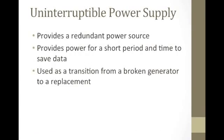The uninterruptible power supply provides a redundant power source. When a piece of technology is running, it has a constant source of energy, and this provides a backup. If this source is interrupted or the connection is lost, it's going to give the user a short period of time so they can save their data, shut down properly, and not make things worse. It's usually done by a battery, which has a limited amount of time but still gives the user some time they wouldn't have otherwise. This creates a transition period where a generator can be fixed or replaced, or basically the source of power can be refurbished.